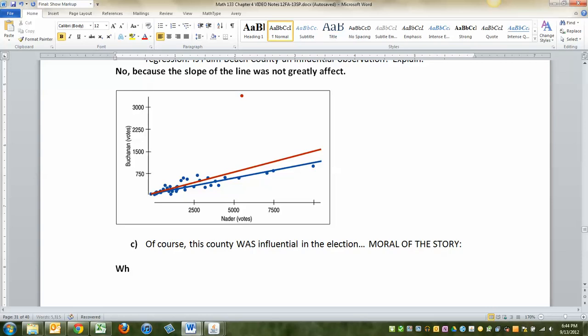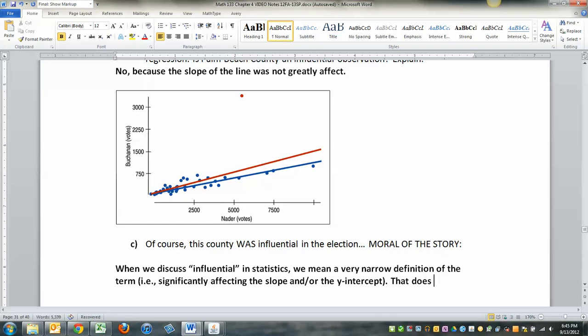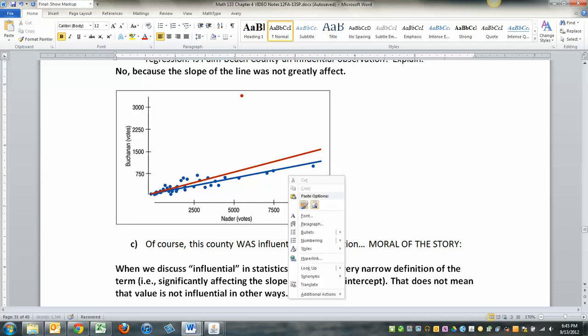So if that's the case, right? When, let me put it this way. When we discuss influential in statistics, we mean a very narrow definition of the term, i.e., significantly affecting the slope and or the Y intercept. That does not mean that the value is not influential in other ways. It's sort of like way back to the beginning.